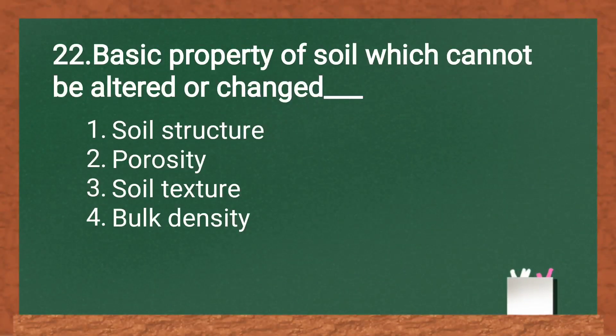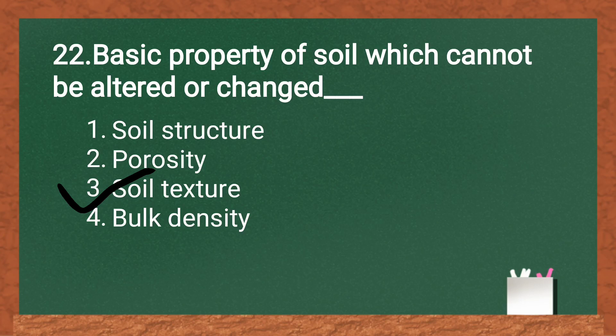The basic property of soil which cannot be altered or changed: soil structure, porosity, texture, or bulk density. The answer is soil texture — it is a permanent property of the soil that we cannot change. The proportion of different particles is texture, while the arrangement of different particles is soil structure.